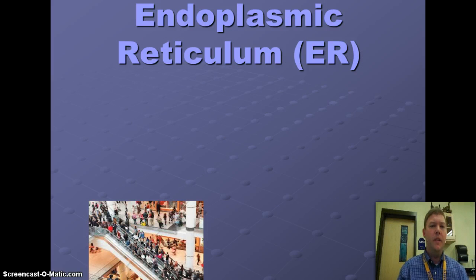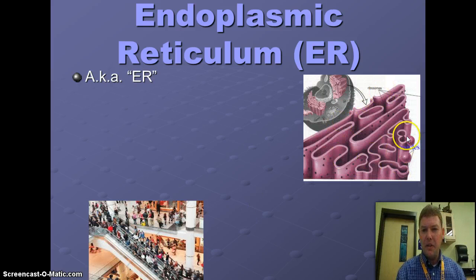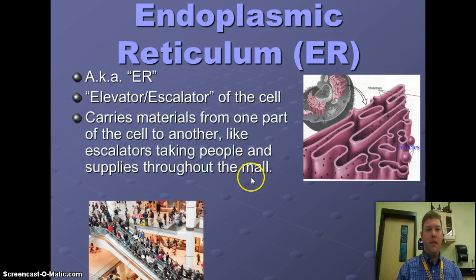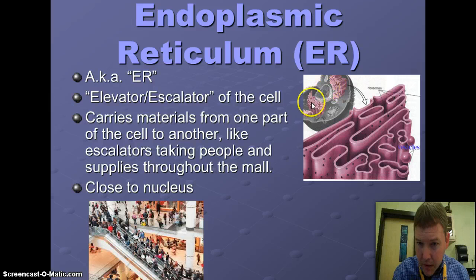The next part is called the endoplasmic reticulum, often abbreviated as the ER. Here's a good picture of the endoplasmic reticulum. Think of it as the elevator or escalator of the cell — its job is to carry materials from one part of the cell to another, like escalators taking people up and down throughout the mall. The ER is located right next to the nucleus.